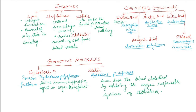Chemicals like organic acids are also produced by microorganisms. Citric acid is produced by the fungi Aspergillus niger. Acetic acid is produced by the bacteria Acetobacter aceti. Lactic acid is produced by Lactobacillus. Butyric acid is produced by the bacteria Clostridium butylicum. Ethanol is produced by the yeast Saccharomyces cerevisiae.